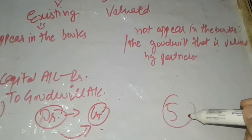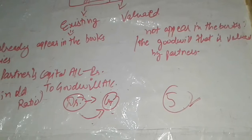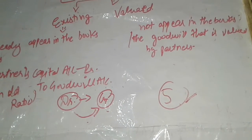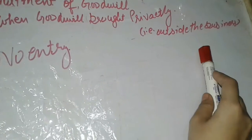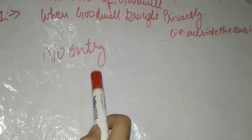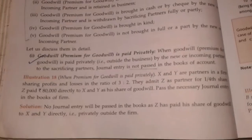Next, adjustment of valued goodwill — it has a total of five cases. Case one: when goodwill is brought privately, meaning outside the business. When the amount of goodwill is not brought inside the business, the business cannot record the transaction of goodwill. So in this case, no entry is passed for the adjustment of goodwill, because the amount of goodwill is not brought inside the business.